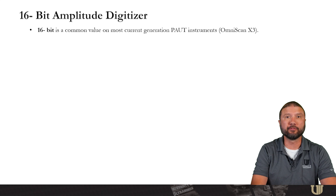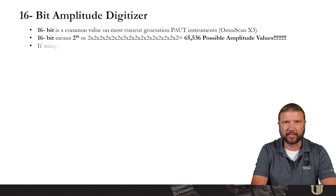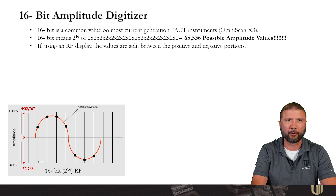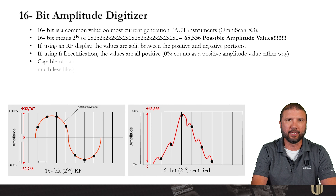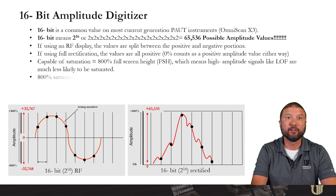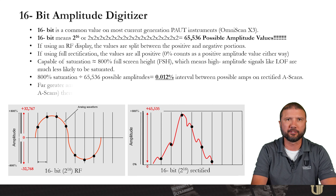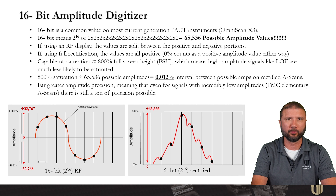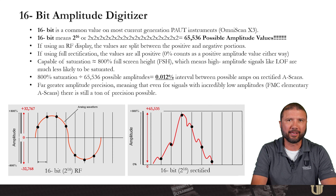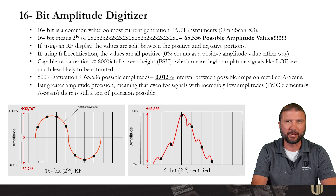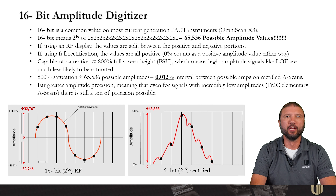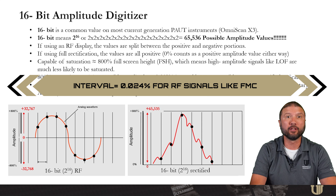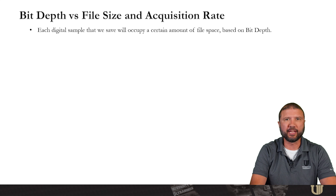16-bit is a common value on most current generation phased array instruments like the X3, the new Topaz, Gecko, and Veo. 16-bit means 2 to the 16th power, or 65,536 possible amplitude values. If using RF, they're split between the positive and negative side; if using full rectification, the values are all positive, and 0% counts as a positive amplitude value either way. These are capable of saturating at 800% full screen height, meaning high amplitude signals like lack of fusion are much less likely to be saturated. 800% saturation divided by 65,536 possible amplitude values gives 0.012% interval between possible amplitudes on rectified A-scans — far greater amplitude precision, meaning even signals with incredibly low amplitudes, like full matrix capture elementary A-scans needed for TFM, still have a ton of precision available.